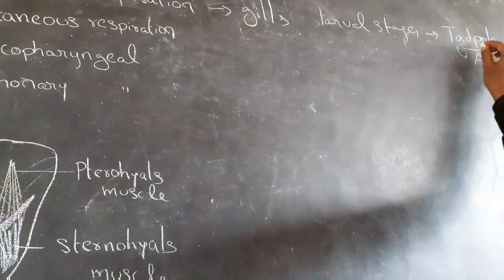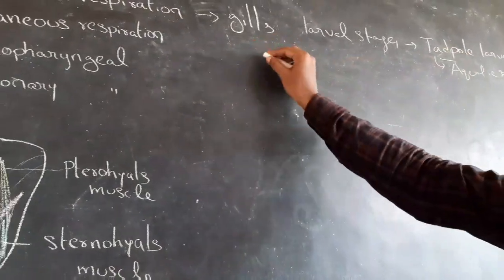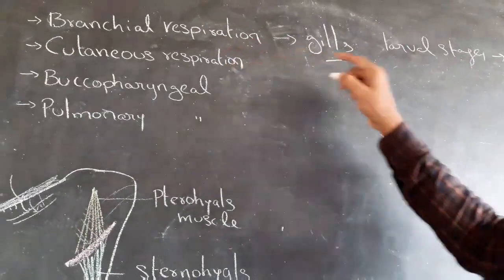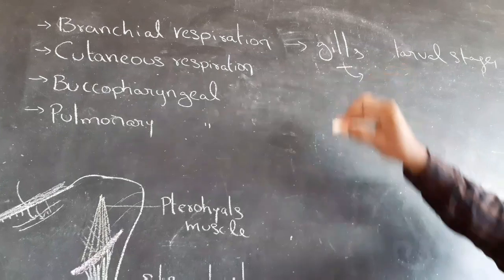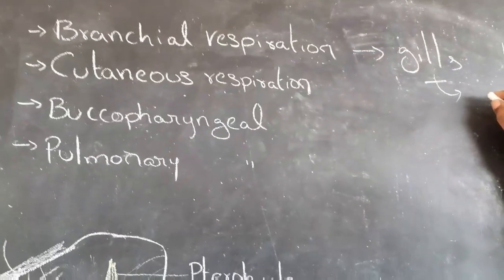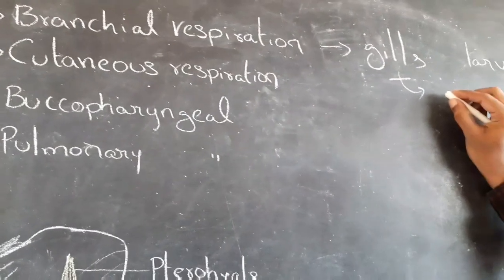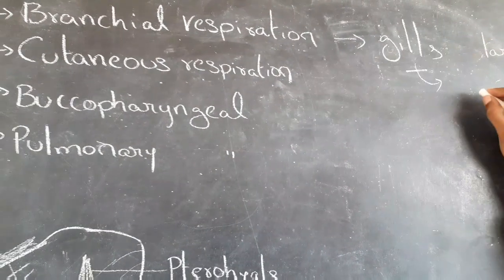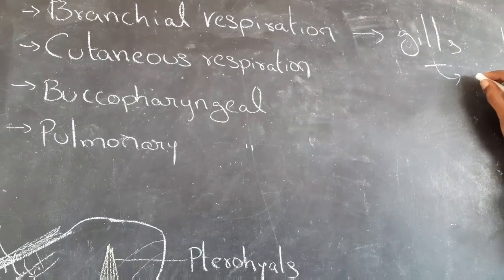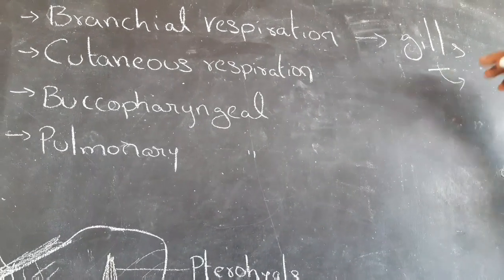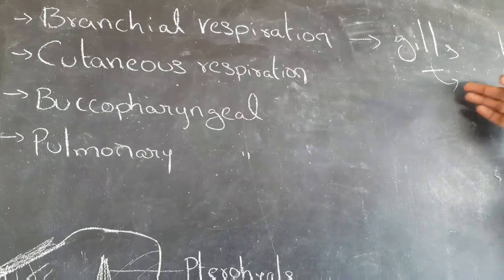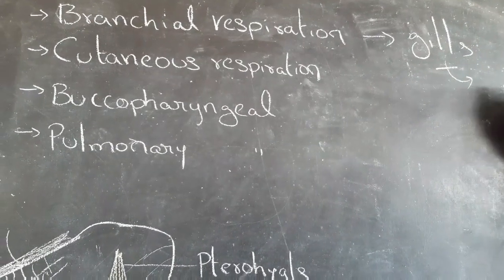In tadpoles, respiration by gills is called branchial respiration. Gills are highly vascular — highly vascular means highly blood supplied. Gases exchange between the dissolved water and blood vessels.